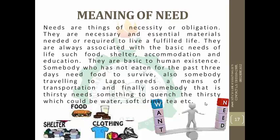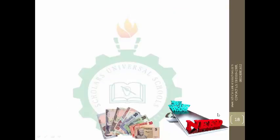Food is one thing people need so much — you need to eat food to survive. After food, you need clothing; you can't be naked, you have to get something to wear. And you need shelter — a roof, a house, to at least survive. Needs are things of necessity or obligations; they are basic to human existence. Someone who has not eaten for three days needs food to survive. Someone traveling needs a means of transportation. Someone thirsty needs something to quench their thirst, which could be water or a soft drink.